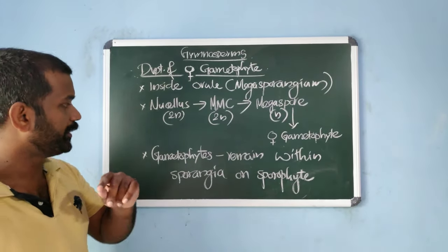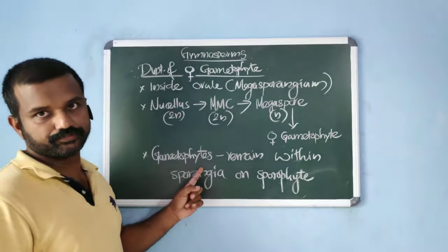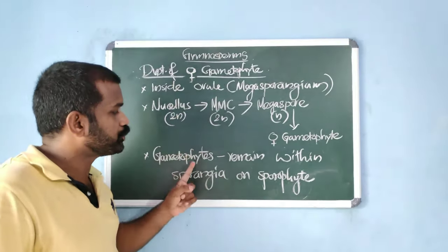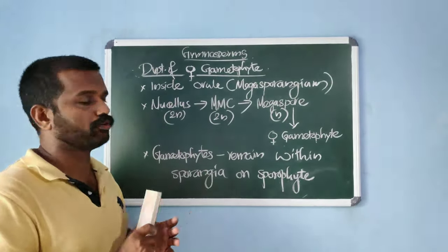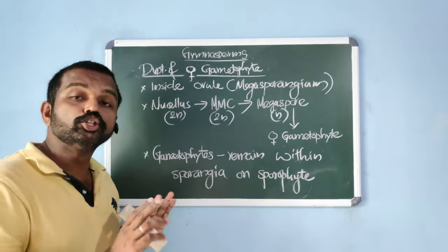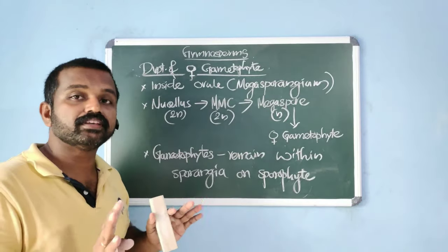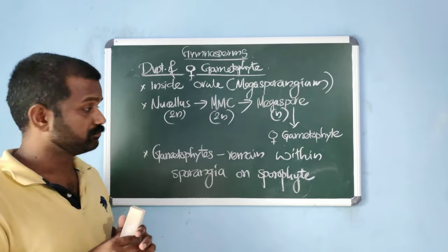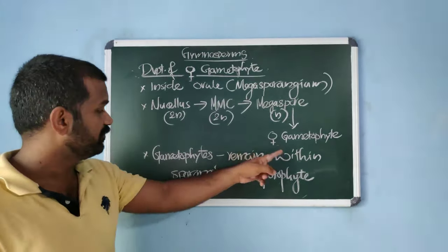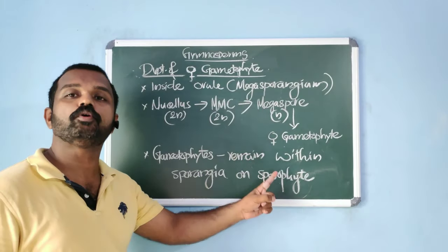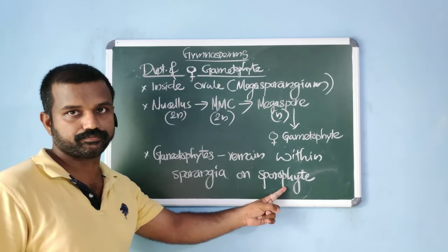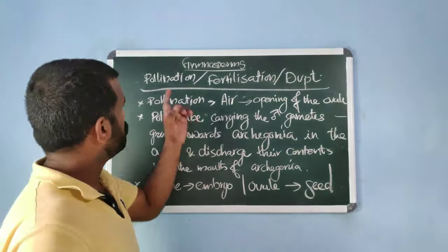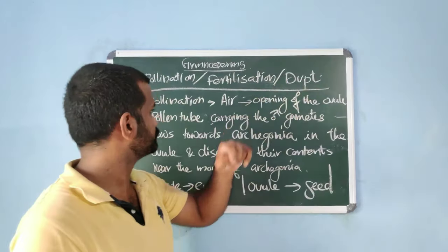Archegonia is the female sex organ in gymnosperms as well, so archegonia serves as the female sex organ from bryophytes through pteridophytes to gymnosperms. Both male and female gametophytes in gymnosperms do not have independent existence — they remain within the sporangia on the sporophyte.